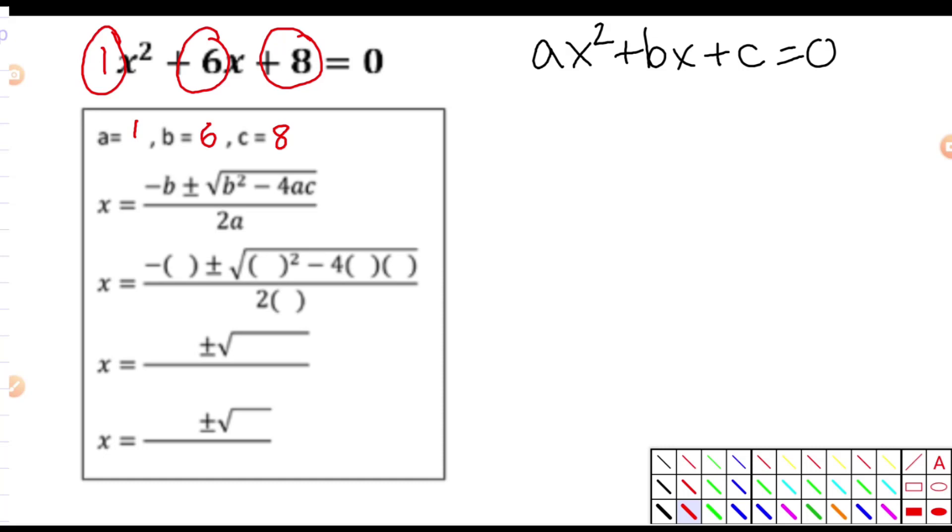And that way you'll remember what's going on here. So negative b, so the opposite of b. Well, that means this is going to be a negative 6. Plus or minus the square root of b squared. Well, b is 6 again. So I'll plug in a 6. Subtract 4 times a. Well, a is 1 in this problem. And then times c. And c is 8 in this problem. And all of this is divided by 2 times a. Well, a is 1.